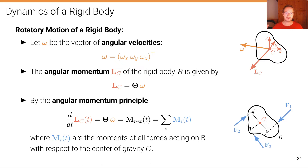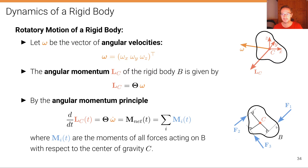Similar to linear motion, for rotatory motion we apply the angular momentum principle: the time derivative of the angular momentum equals the inertia tensor times the angular acceleration, which equals the net moments of all forces acting on the rigid body. A moment is the product of the lever arm length times the force applied in that direction, and summing all such moments gives the net moment equal to the time derivative of the angular momentum Lc.